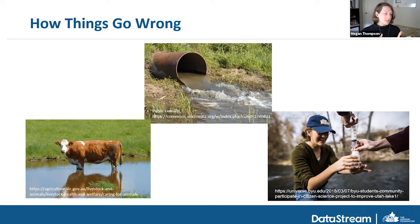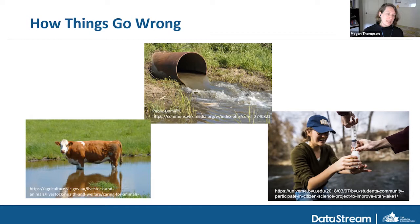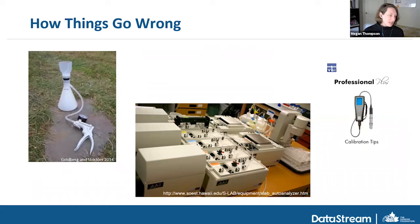The filtering and sample handling in the field, the equipment used in a lab or in the field — there is a potential for contamination of samples to occur during any one of these steps. Using standard procedures, making sure you're using the right procedures, and being consistent with all your sampling and calibration efforts is really important to make sure you're not introducing these errors.